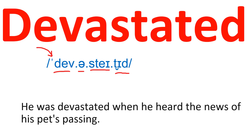Devastated. It's a four-syllable word and the stress is on the first syllable, shown by the arrow. The second syllable is a schwa sound — devastated. You don't say 'devastated' or 'devastated,' it's 'devastated.' Example sentence: He was devastated when he heard the news of his pet's passing.